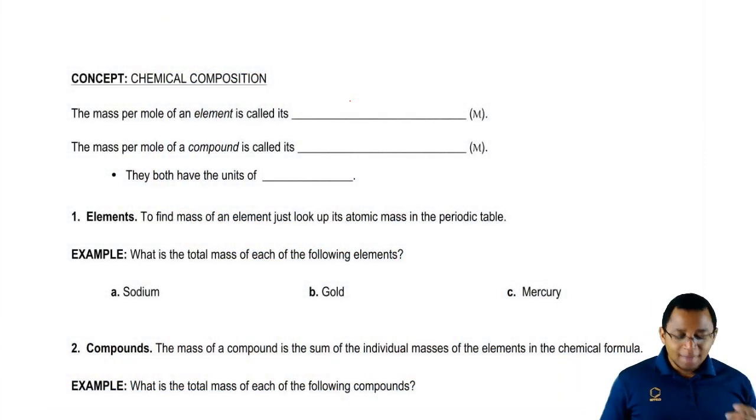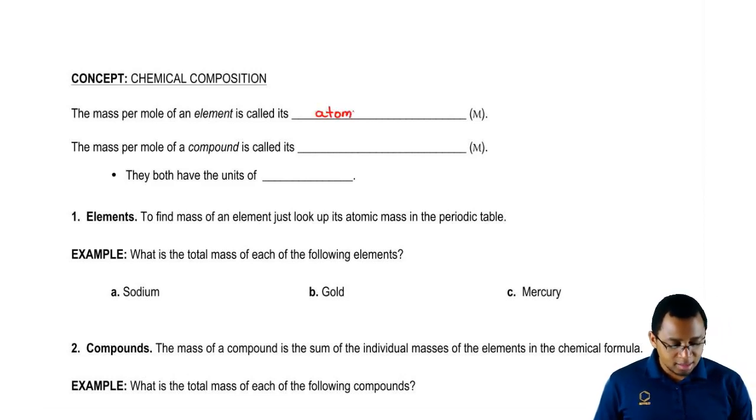The mass per mole of an element is also known as its atomic mass. That's just the mass of all the protons and neutrons found within an element. The reason we don't care about the number of electrons is because electrons weigh a lot less than protons and neutrons.